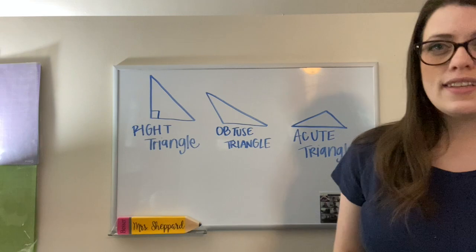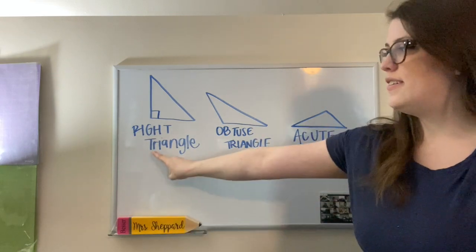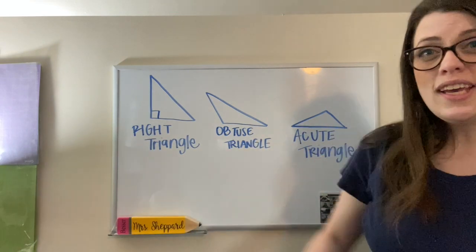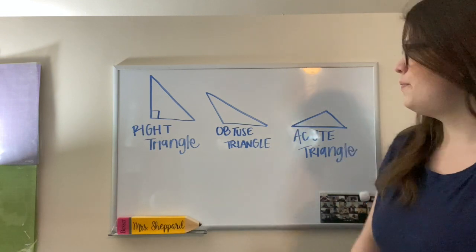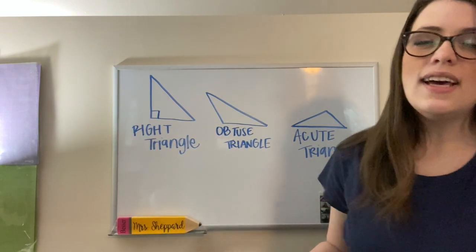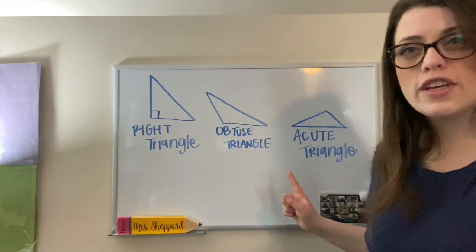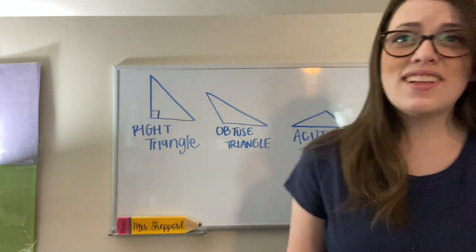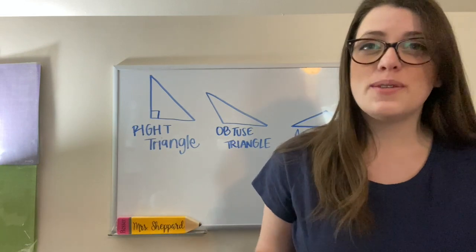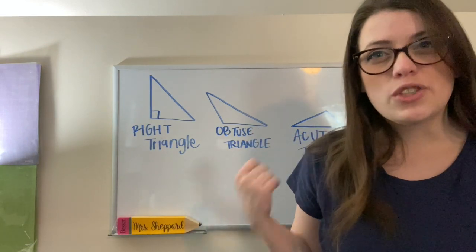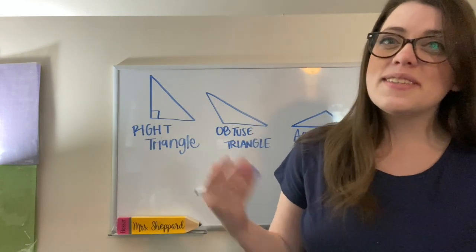If it has at least one right angle, it's a right triangle. If it has an obtuse angle, it's an obtuse triangle. And if it has all acute angles, it's called an acute triangle. As long as you remember the definitions of those angles, classifying triangles by their angles is fairly simple.